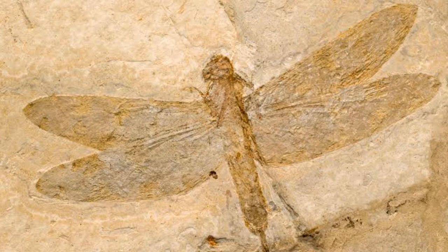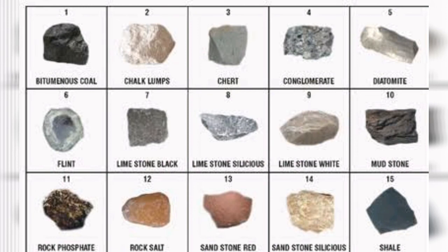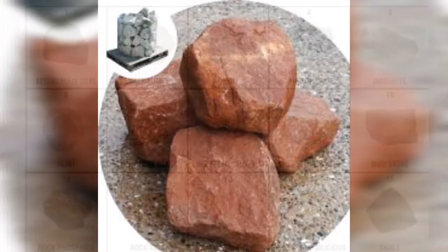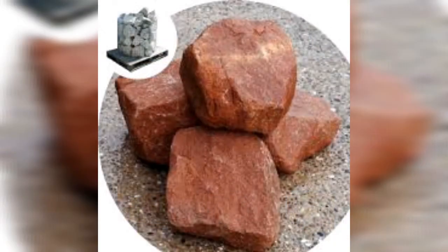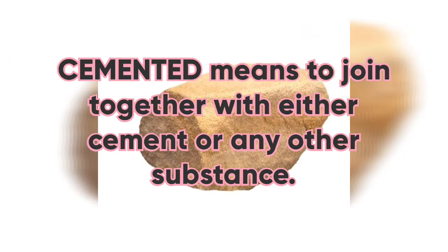Did you all understand what sedimentary rocks are? There are many types of sedimentary rocks — for example, sandstone, shale, conglomerates, and limestone. Number one is sandstone. These are formed when small particles, small grains of sand, get compressed and are cemented together. Cemented means they are pressed together and then prepared as a sedimentary rock.